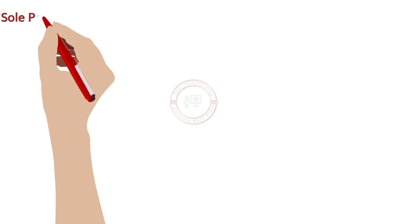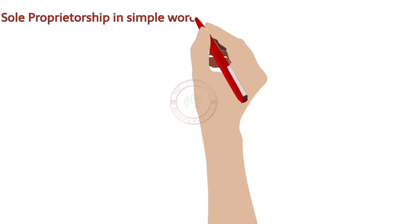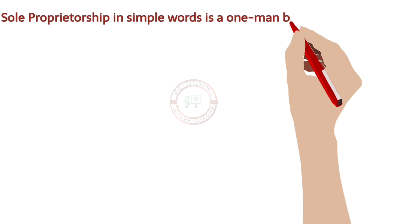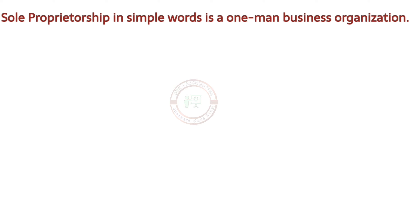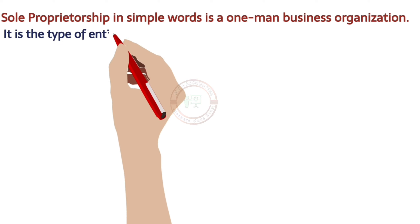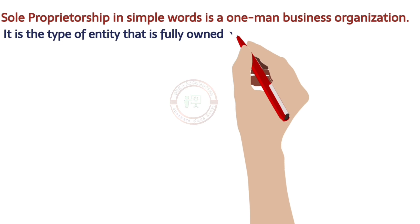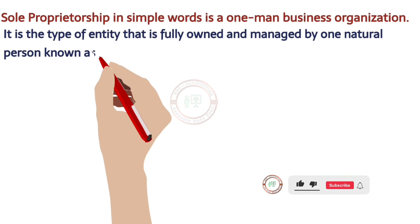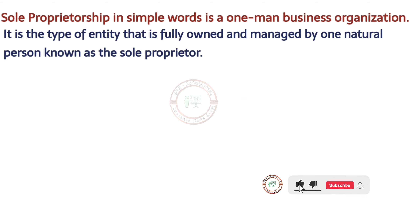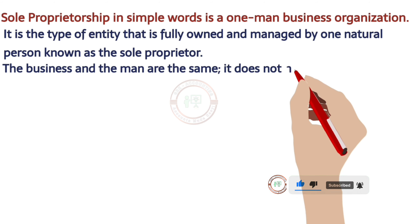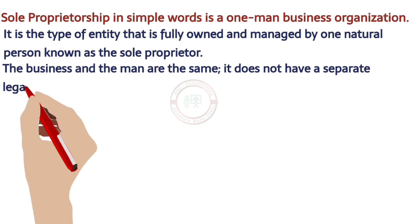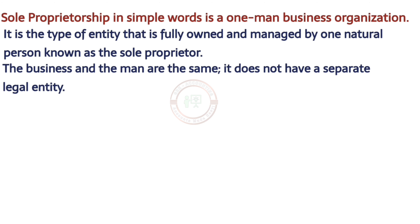Sole proprietorship, in simple terms, means a one-man business organization. In this, only one person will be there who is managing the business. He may be employing a few people, but the sole owner will be only one person, where the business and the person will be the same.